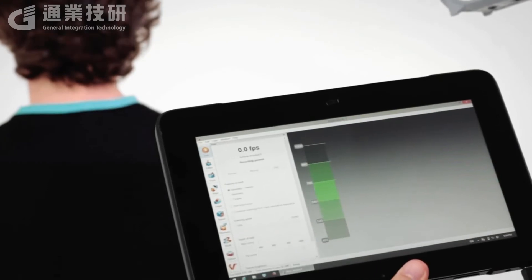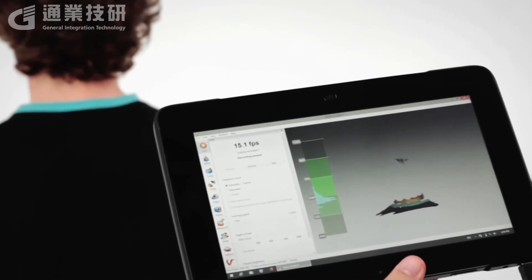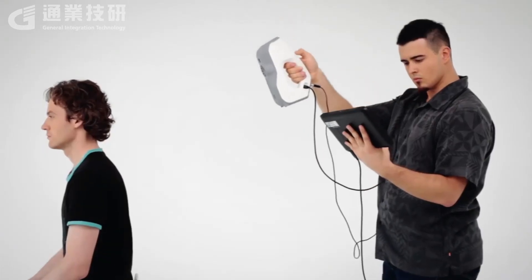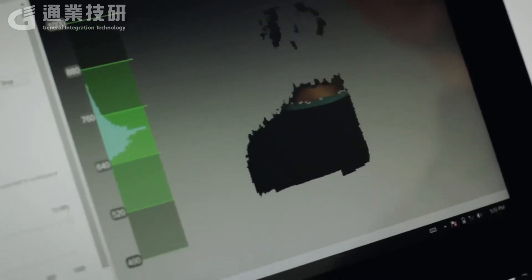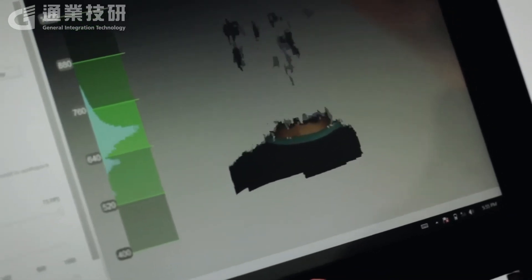Since individual hairs are so fine, the scanner does not see them when set on normal mode. Increasing the sensitivity in the scanning settings will help the scanner to see the shape of the hair and recreate the missing bits.